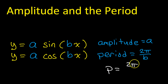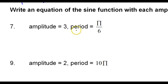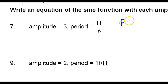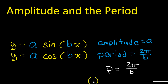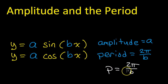Period is 2 pi over b — and same for cosine. So if I want to write a sine equation with a given amplitude and period, the first thing I need to do is figure out what that b value is by using this formula: period is 2 pi over b.